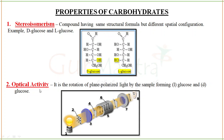Next is optical activity — here we discuss small l and small d. Light from a source passes through a monochromator to get a single wavelength, which is scattered in all directions. Passing it through a polarizer converts the scattered light into plain polarized light in a single direction. This plain polarized light is then allowed to pass through the sample, which can rotate it left (anti-clockwise) or right (clockwise).